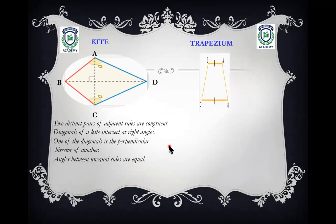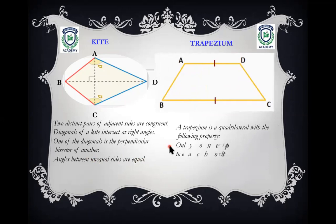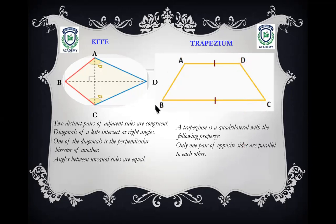Trapezium: a trapezium is a quadrilateral with one pair of opposite sides parallel to each other. Line AD is parallel to line BC.